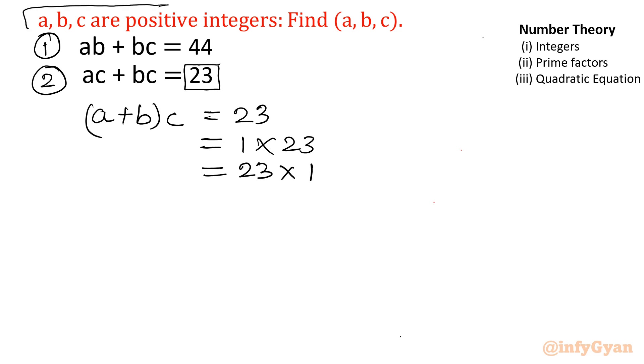Now as it is given abc are positive integers, the minimum value of a is 1, the minimum value of b is 1. If I add both, then minimum value of a plus b would be 2 or greater than 2. If I write a plus b equal to 1, c equals 23, and a plus b equal to 23, c equals 1, the first case cannot be accepted because a plus b cannot be 1. A plus b must be 2 or greater.